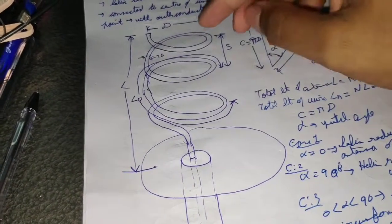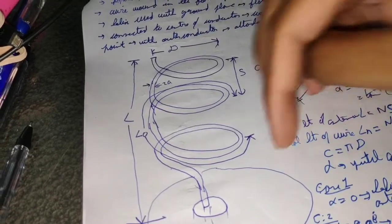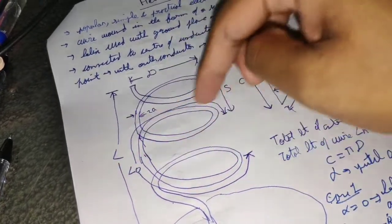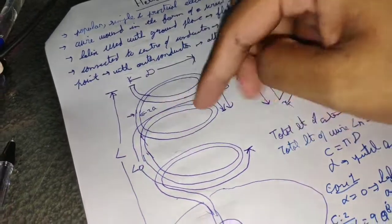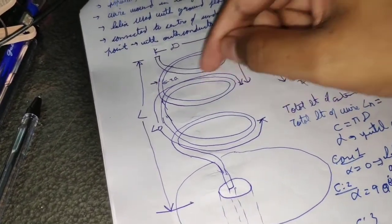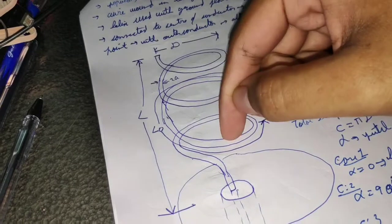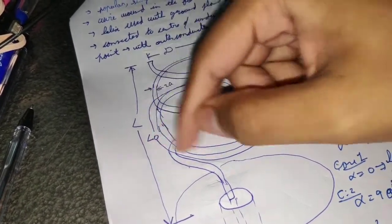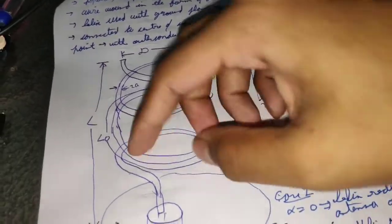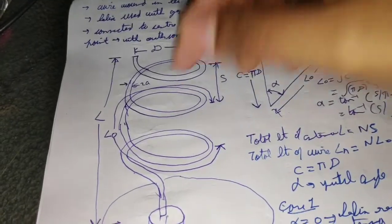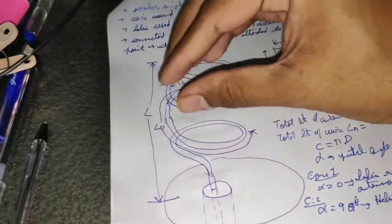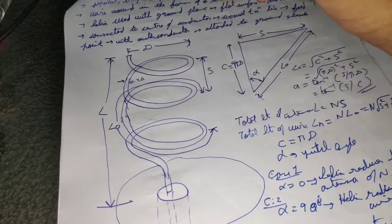Now, considering one loop of the helix — with turn length l₀, spacing S, and thickness 2a — I am reshaping this helical ring into the form of a triangle. This is done to determine the pitch angle α, because it is difficult to analyze the angle directly from the curved ring shape.